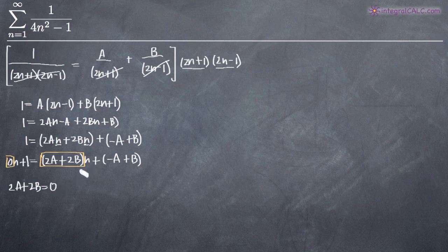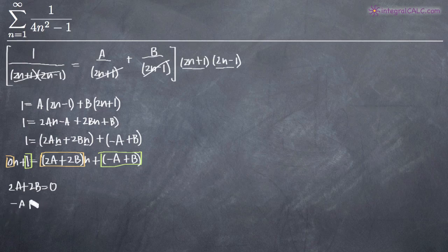Similarly, because the constant on the left is equal to 1, the constant on the right — negative A plus B — must also be equal to 1. So we say negative A plus B equals 1.